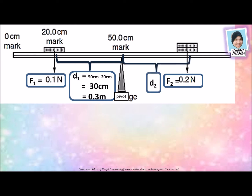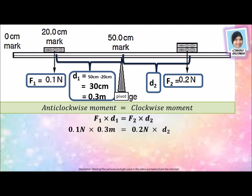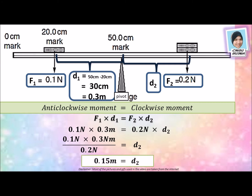We have to find D2. Using the formula anti-clockwise moment equal to clockwise moment, we put in all the data. F1 times D1 means 0.1 Newton times 0.3 meter equals F2 times D2, which means 0.2 Newton times D2. To find D2, we put 0.2 Newton on the left-hand side. Therefore, D2 is equal to 0.1 times 0.3 divided by 0.2, which gives us 0.15 meter.